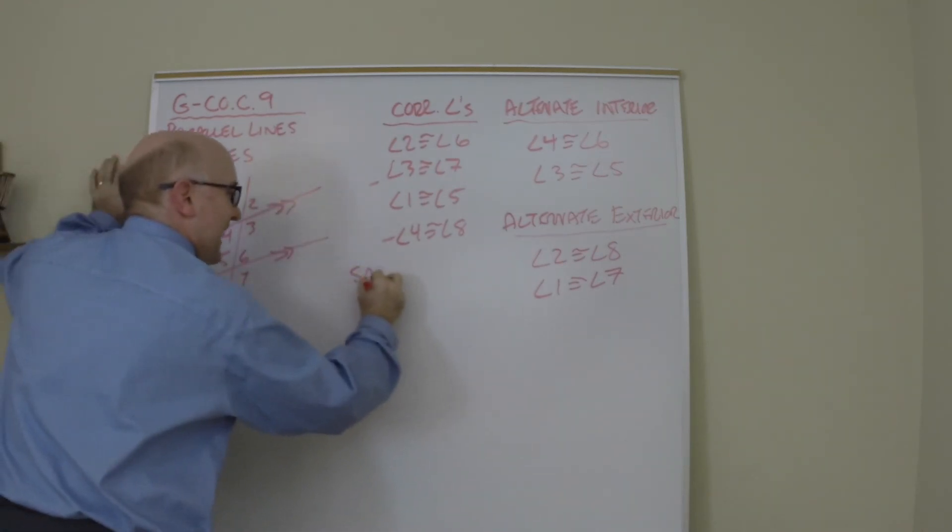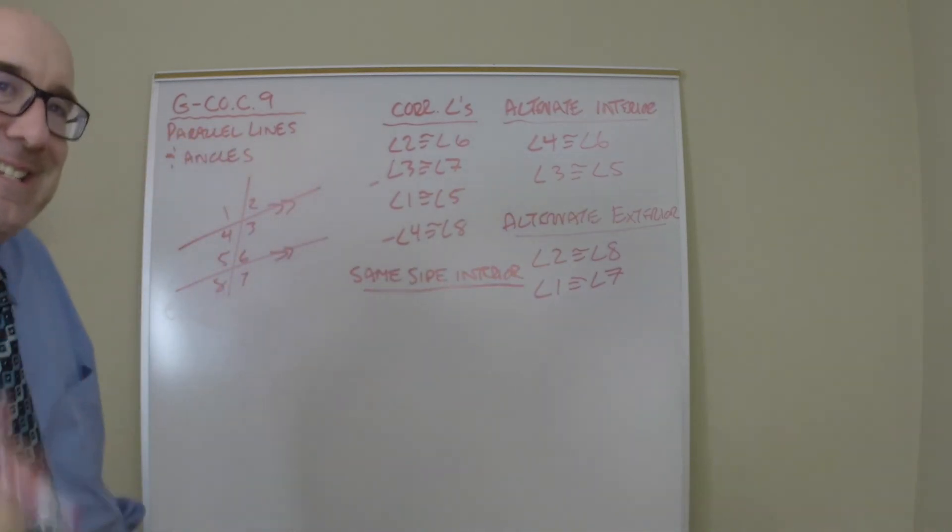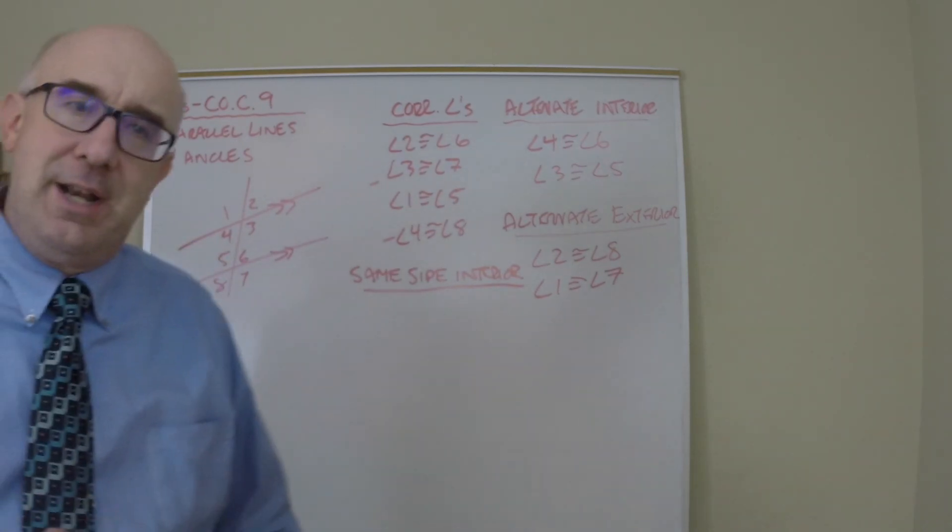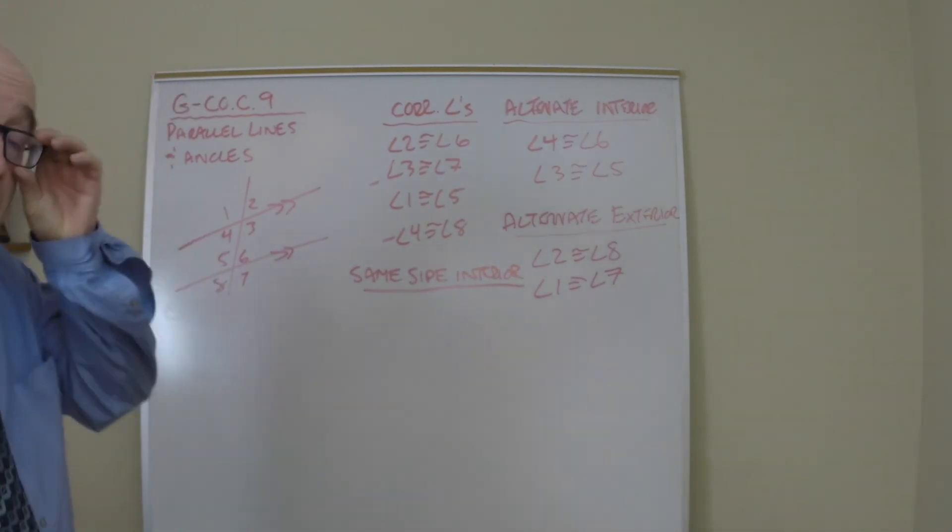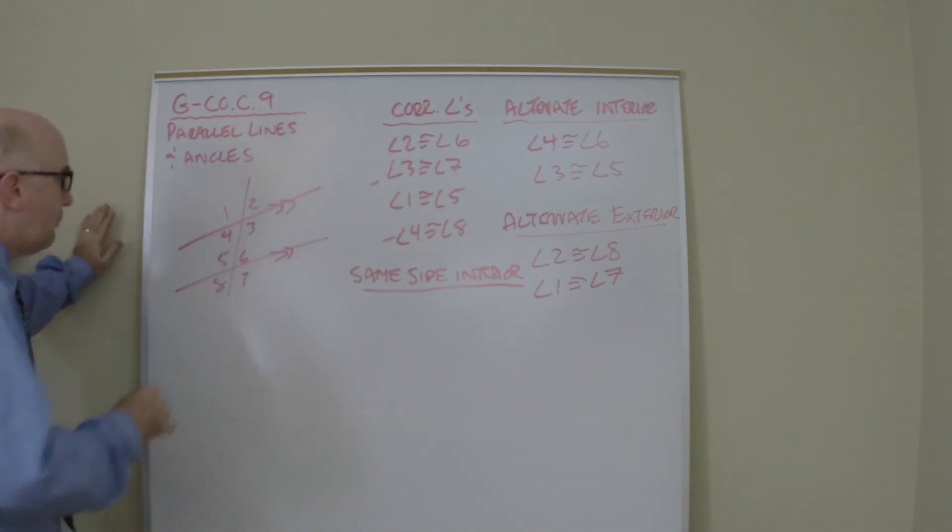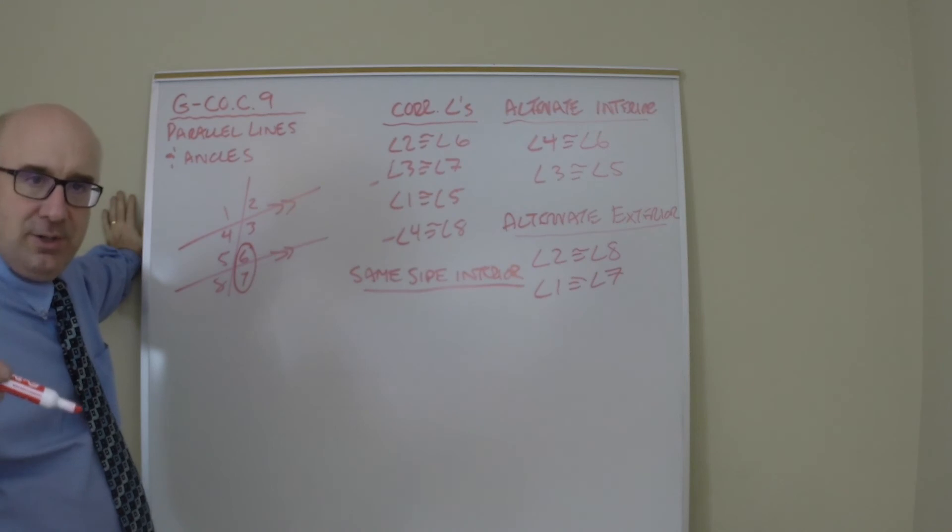The first group are called same side interior—some books call them consecutive interior. This would be same side interior: angle 3 and angle 6, or angle 4 and angle 5. These are not equal, so it's a different relationship—they are supplements. I'm going to talk you through this one verbally. Here's what I'm going to say: angle 6 and angle 7 equal 180 degrees because linear pairs are supplements.